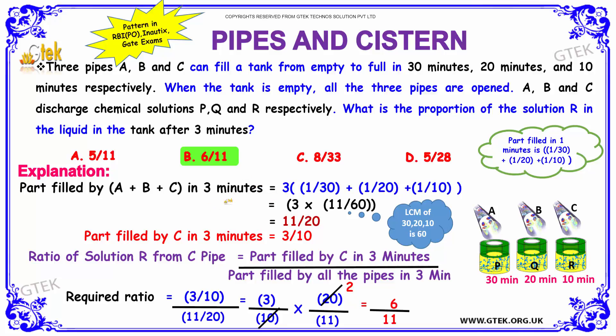The part filled by A, B, and C in 3 minutes can be obtained by multiplying 3 with the time taken to fill the tank by A, B, C in 1 minute. So in 1 minute it is 1/30, 1/20, and 1/10. Sum it up and multiply it by 3 in order to find the part filled by A, B, C in 3 minutes. So 3 times 11/60 after taking your LCM for 30, 20, and 10. That gives your answer as 11/20.